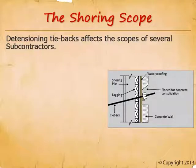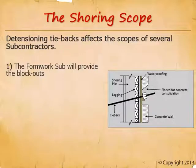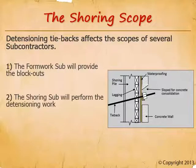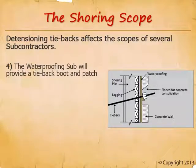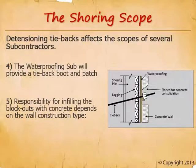Bidders do what they can to keep their bids as low as possible, so they absolutely will not include anything they don't have to or anything they don't think their competitors are providing. Blockouts in the foundation wall are required for access to the tieback heads so they can be detensioned once the building can support itself. The formwork subcontractor will construct the blockouts. The detensioning and cutting off of the ends will be by the shoring subcontractor. Tiebacks and their blockouts interrupt the wall steel, so we need to compensate by adding additional rebar trim steel around the openings — provided by the rebar sub.